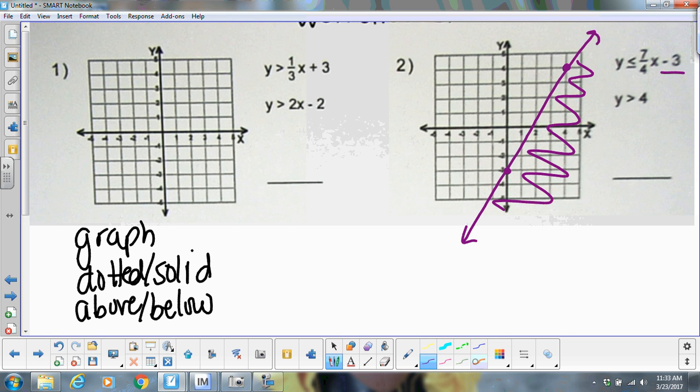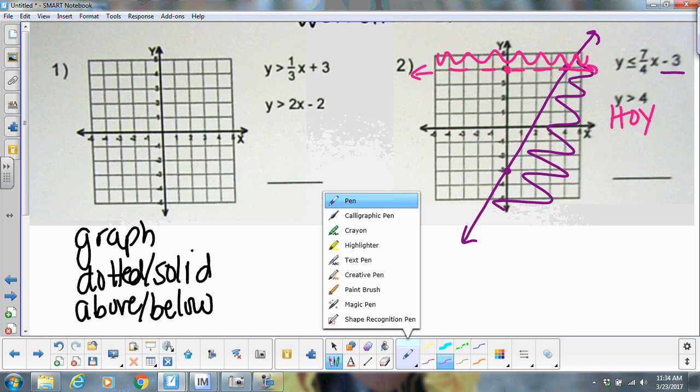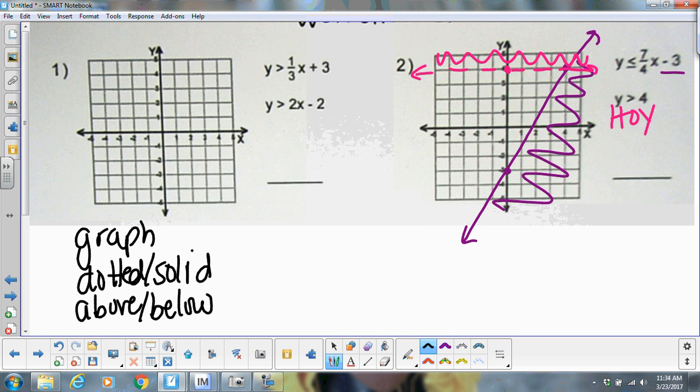The second equation here is a little different. It's just a y line, your horizontal line, which means I'm going to go to four on the y-axis and I'm going to draw a horizontal line. It is dotted because of the sign, and it is greater than, so I would shade above. So the only place that these two overlap is going to be this little triangle right up here.